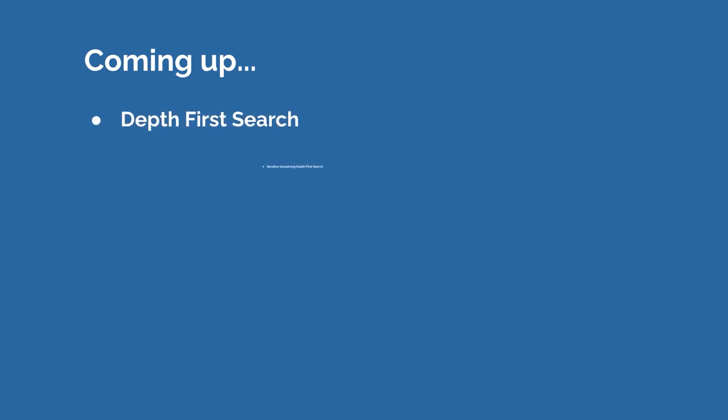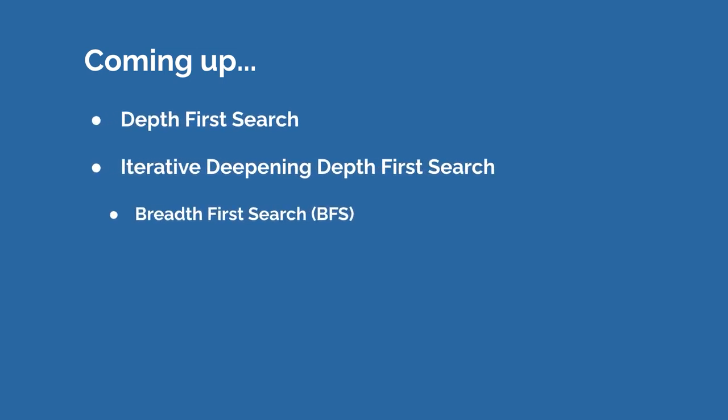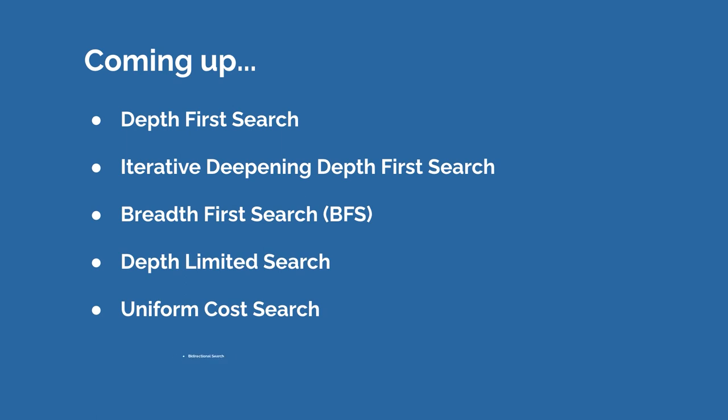We're going to talk about types of uninformed search. We have depth-first search, iterative deepening depth-first search, breadth-first search, depth-limited search, uniform cost search, and bidirectional search. These are very common types that you should know, which is why we're going to break them down and code some out as well — to see how we can search through a tree or a graph with these specific searches. You've probably heard of DFS and BFS, which are commonly asked at the coding interview.